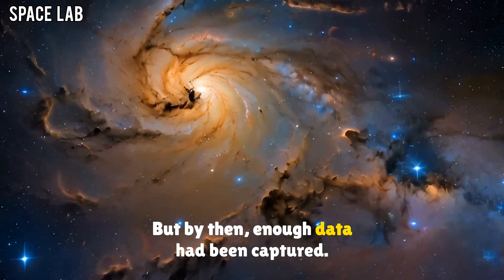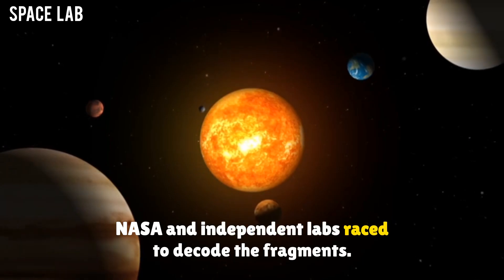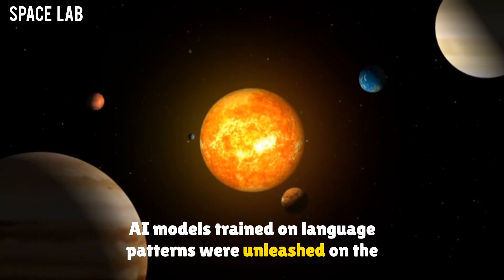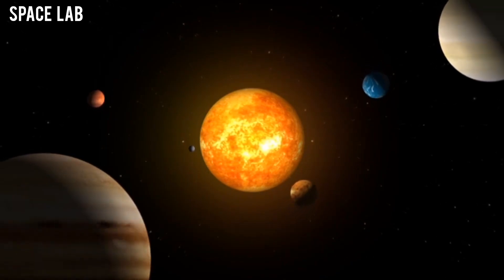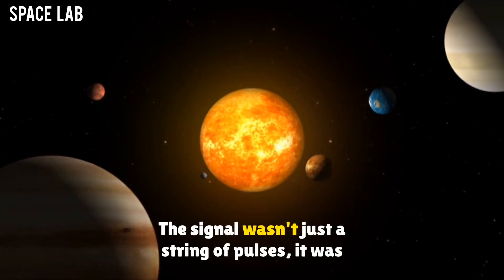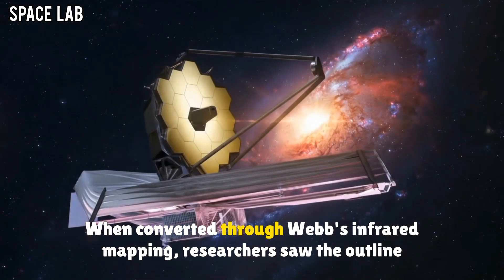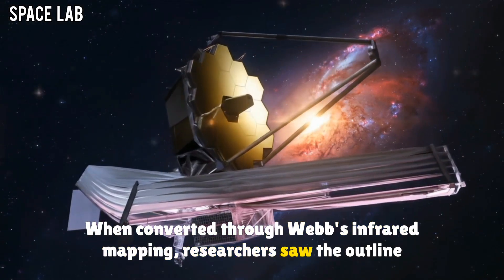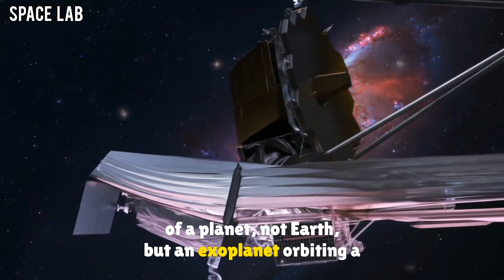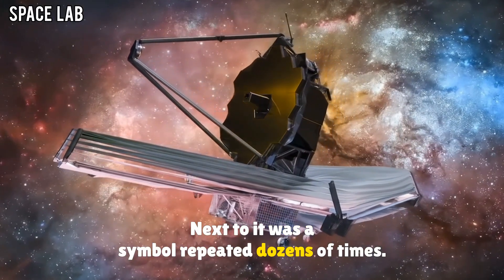But by then, enough data had been captured. NASA and independent labs raced to decode the fragments. AI models trained on language patterns were unleashed on the transmission. What emerged stunned even the most skeptical scientists. The signal wasn't just a string of pulses. It was an image. When converted through Webb's infrared mapping, researchers saw the outline of a planet.